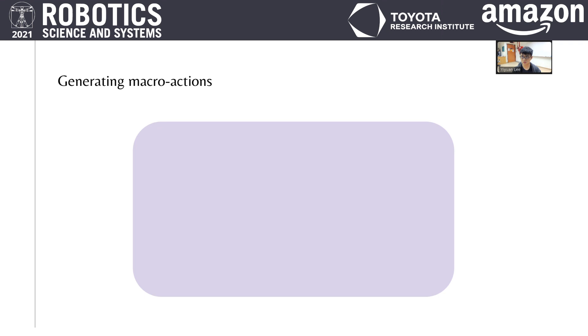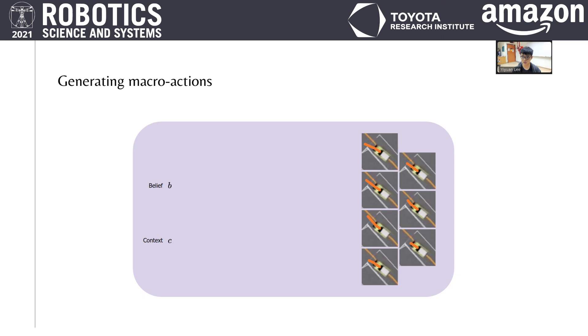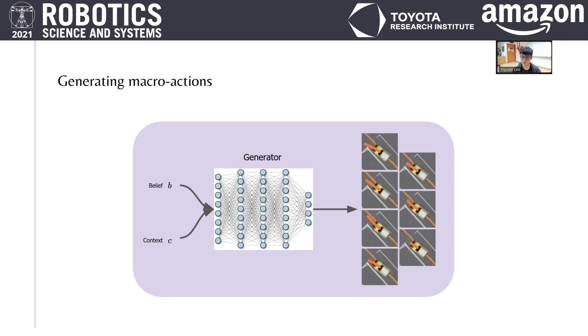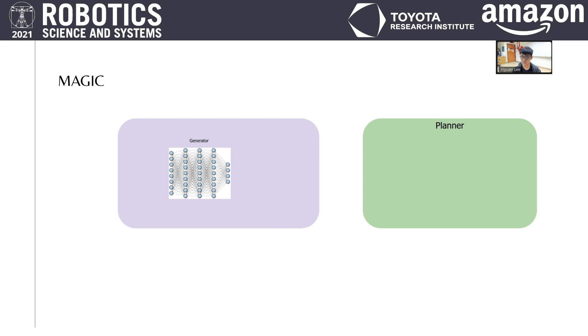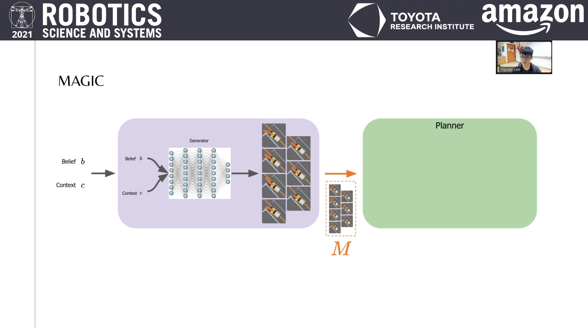For the current belief and context, we want to find a set of good macro actions for planning, which are aware of the current situation. We accomplish this by learning a generator, which is a neural network that generates good macro actions for the current situation. The generator is learned completely offline using past experience and is deployed online for use with the planner as follows. At each step, the current belief and the context are first passed to the generator, which uses that information to produce a set of high-quality situation-aware macro actions. The macro actions are then sent to the planner, which uses them to plan efficiently.